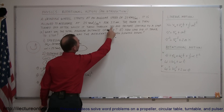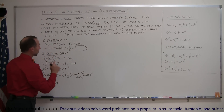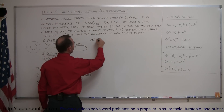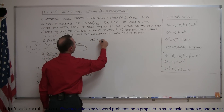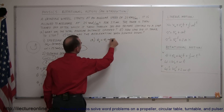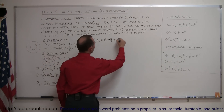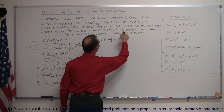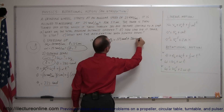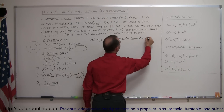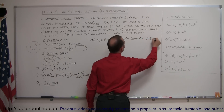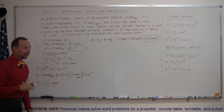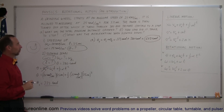During part one where the wheel is speeding up, we covered 223 radians. On the slowdown, we covered 380 radians. So for part A, theta total equals theta one plus theta two: 223 radians plus 380 radians equals 603 radians total angular distance covered while the wheel was speeding up and slowing down.